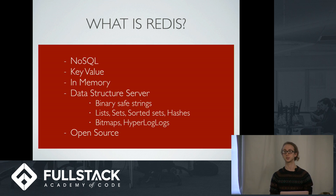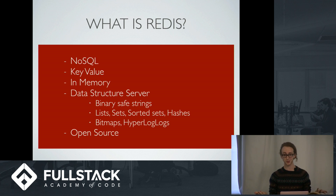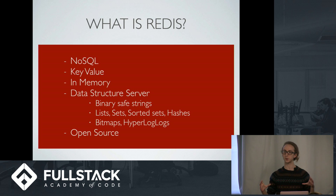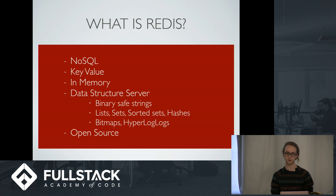Redis is also a data structure server. It gives you several different data structures that you can use, so your key values aren't just big unorganized strings. Some of the structures it gives you are: binary safe strings, which are just a string; lists, which are a lot like the lists we've implemented so far; sets and sorted sets — a set is like an array where it's a grouping of values, but no value will repeat and the order doesn't matter; a sorted set, where order does matter; hashes, which we know very well; bitmaps, which are for bits; and hyperloglogs, which are a probabilistic data structure used for the cardinality of sets — which, if you don't speak math, means counting.